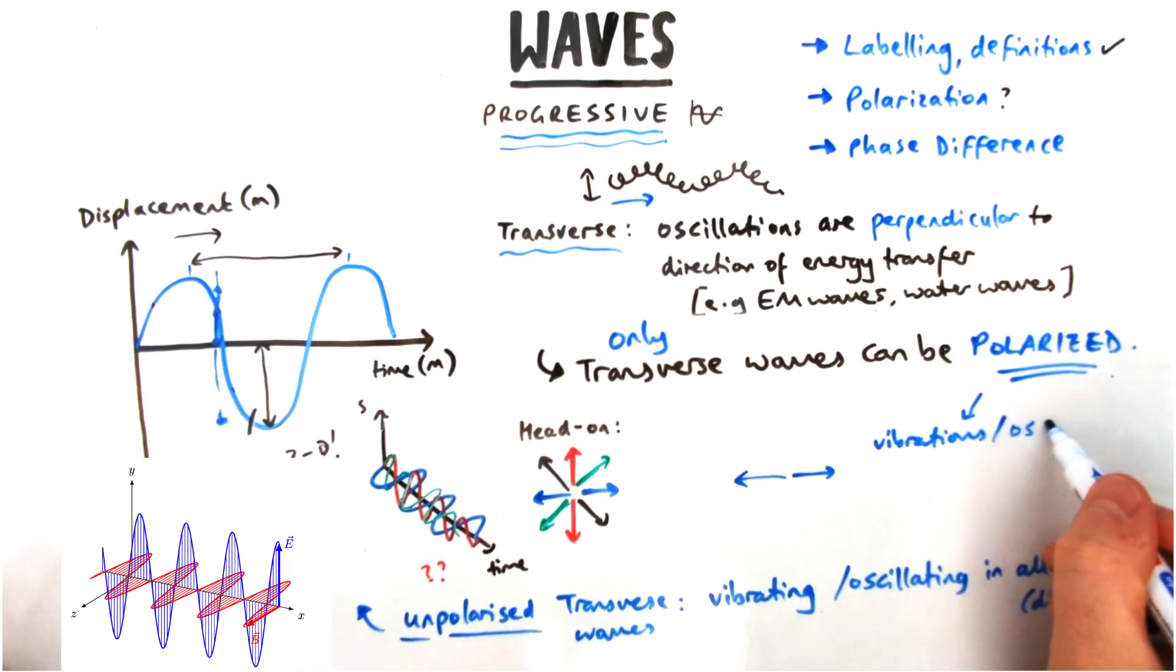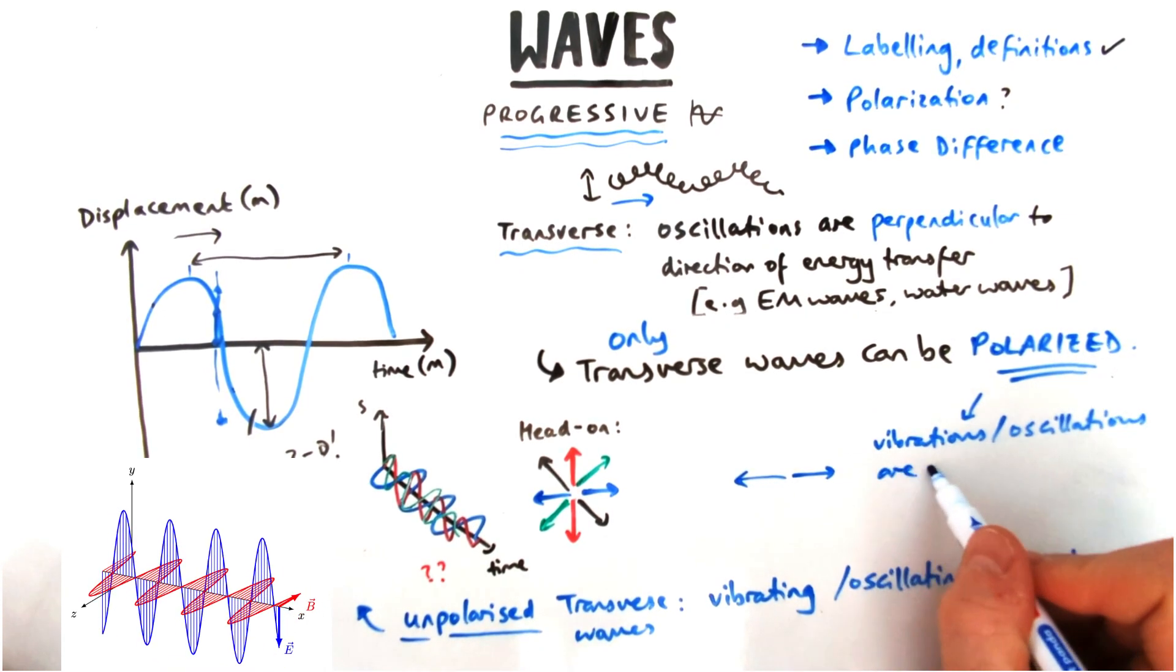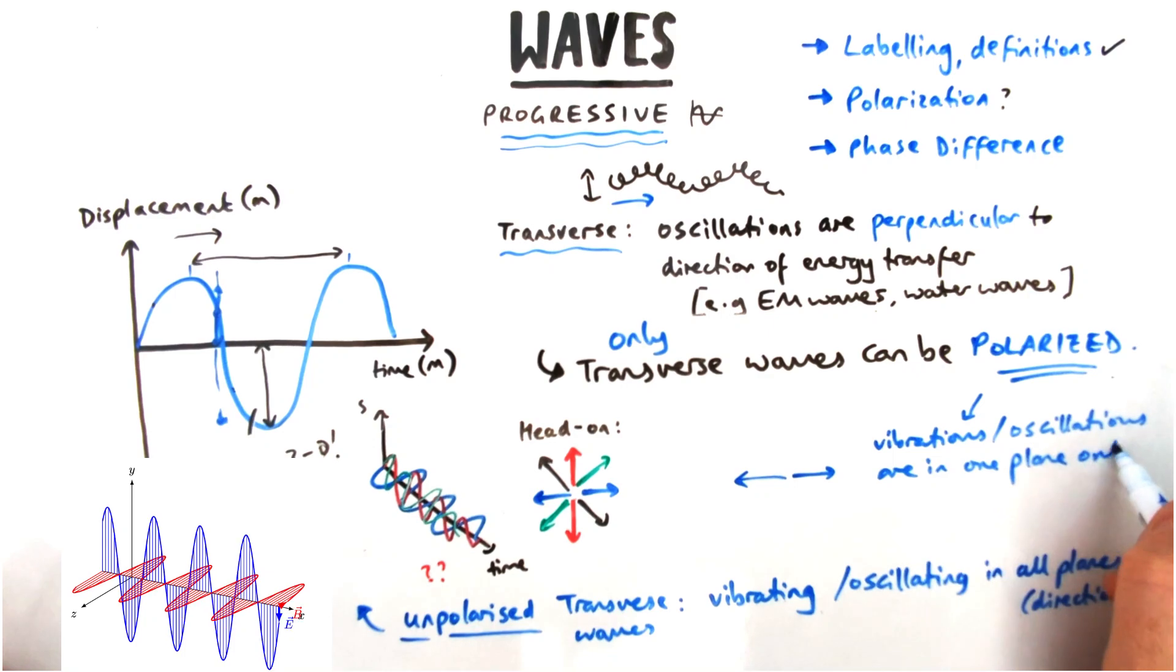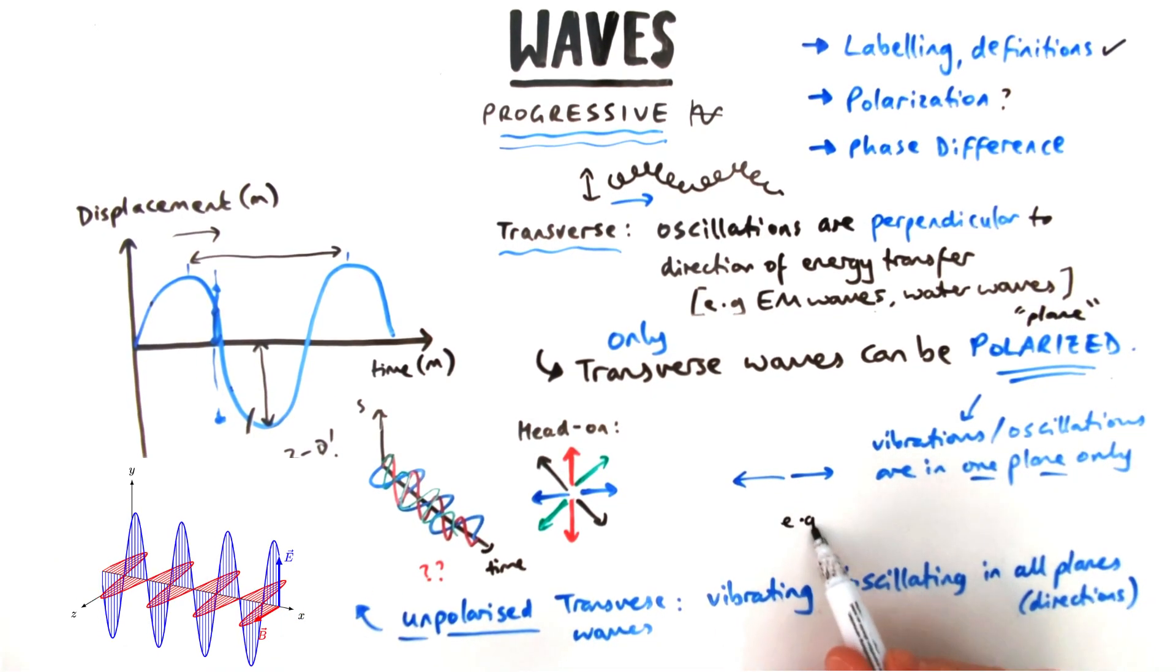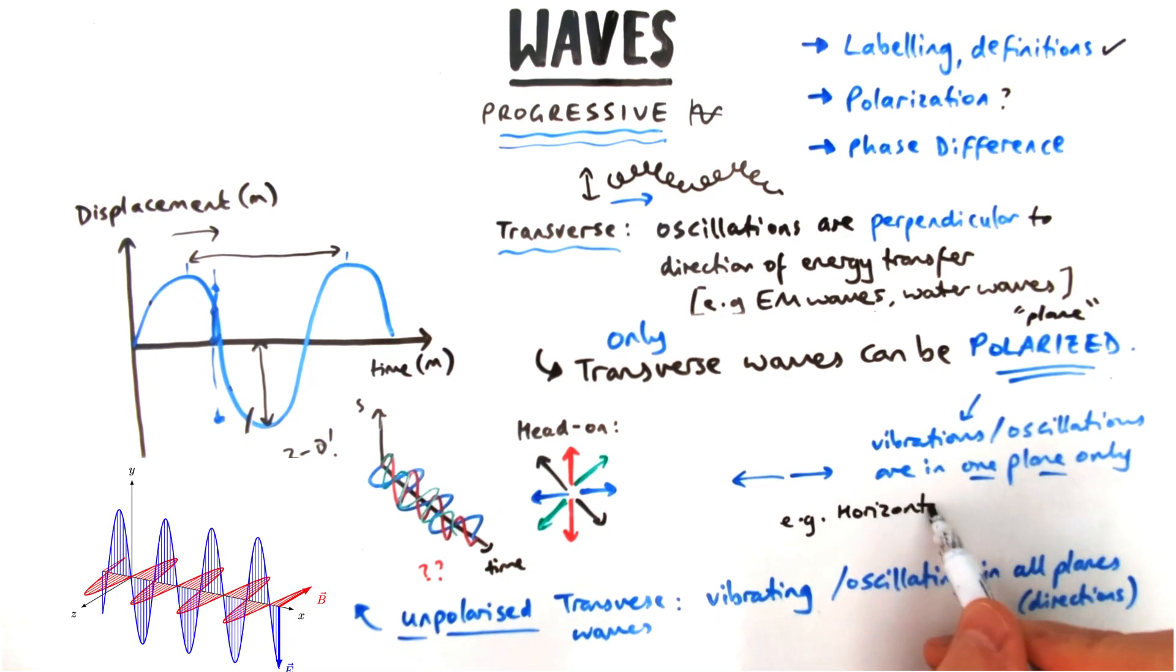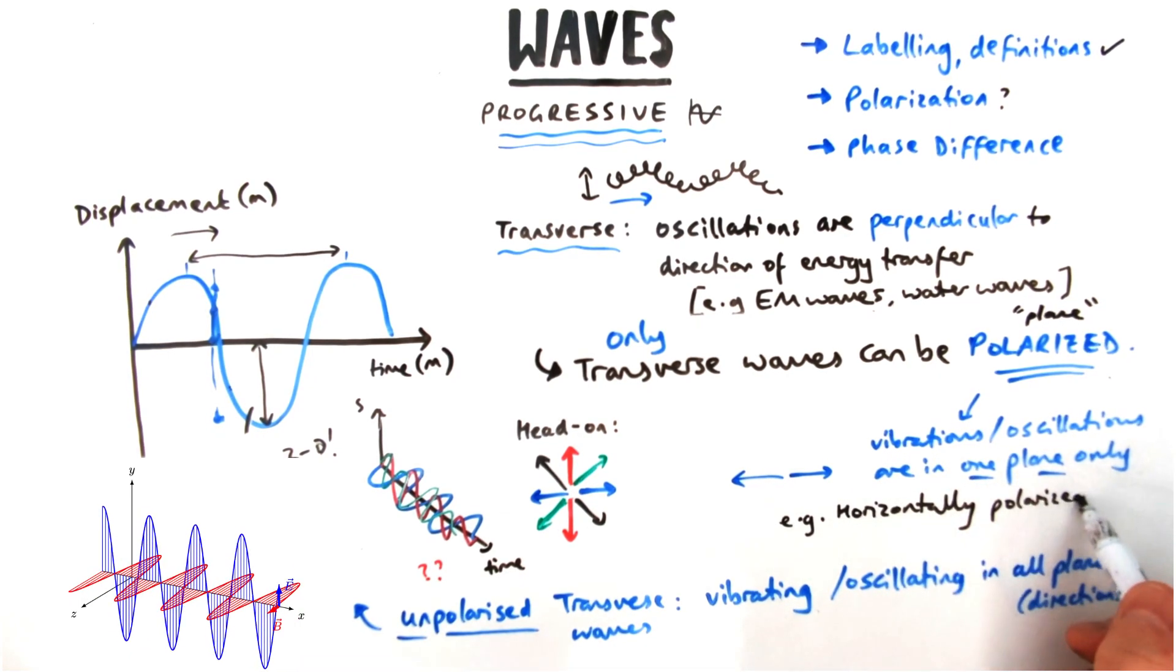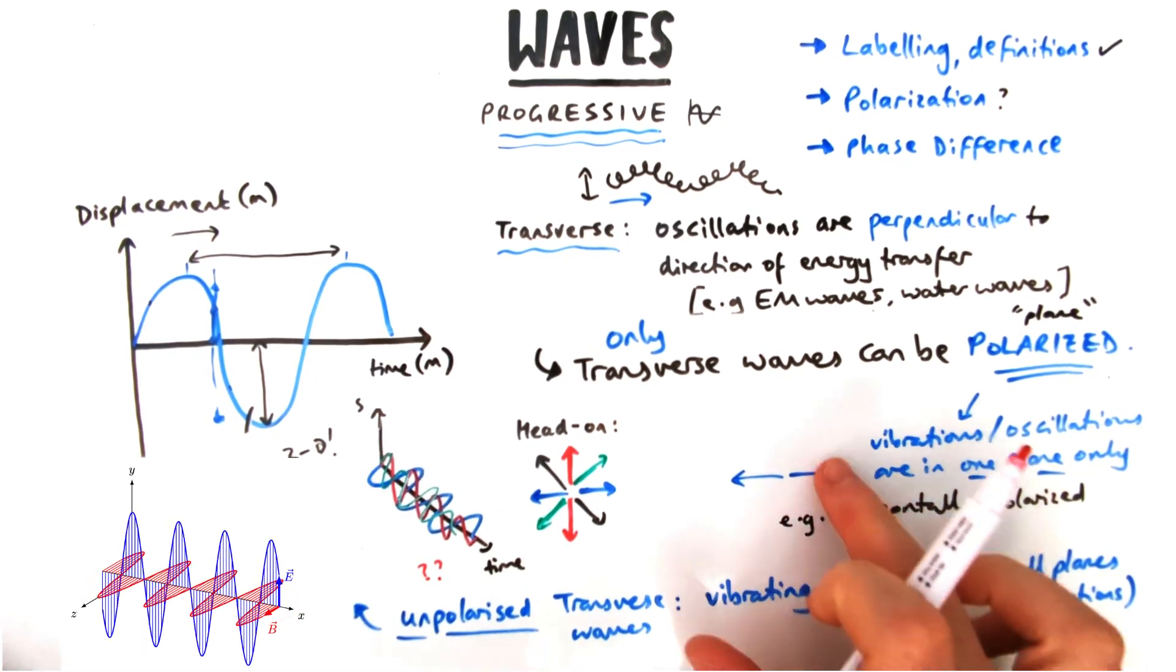Looking at it head-on, I've just got the left to right ones here instead of up and down. That's also known as plane polarized, and this one would be horizontally polarized because I've let the horizontal plane through. Instead of the vertical one, I could do that as well, and that would be vertically polarized light or vertically polarized wave.